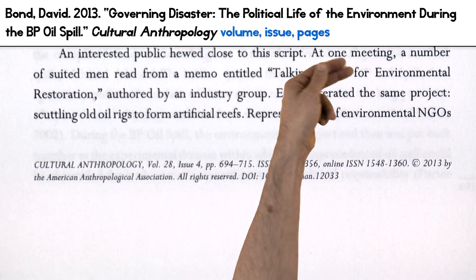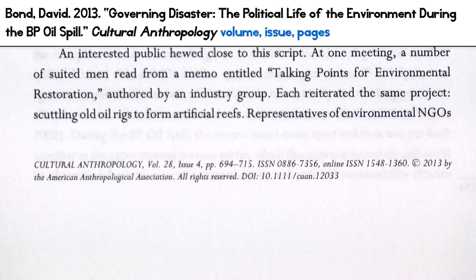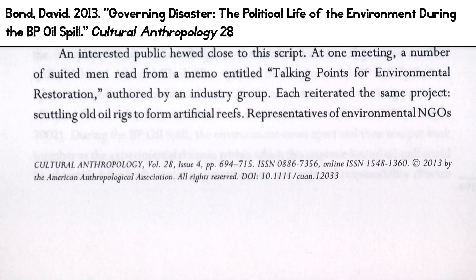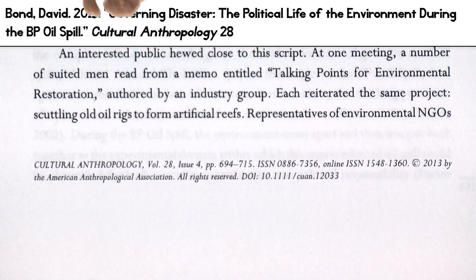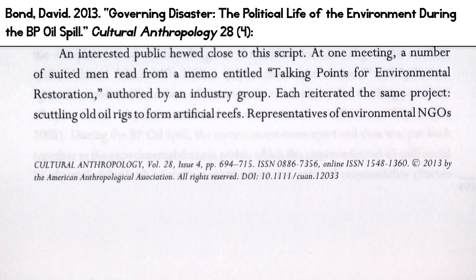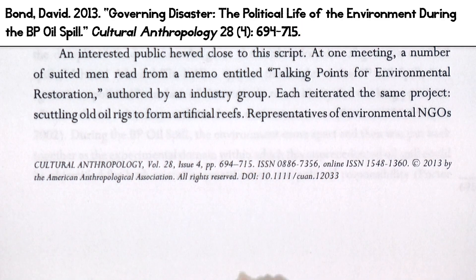Journals are periodicals. They have volumes and issues and page numbers — gotta have all of that or the citation is incomplete. Volume comes first, so I look around for something that looks like a volume number. Here we go, at the bottom of the first page: Volume 28. I drop the VOL stuff because Chicago author-date says so. After the volume comes a space, then the issue number, 4, in parentheses. I drop a colon after that and insert the page range — that means the starting page, a hyphen, and an end page: 694–715, and a period to show that this section's finished.